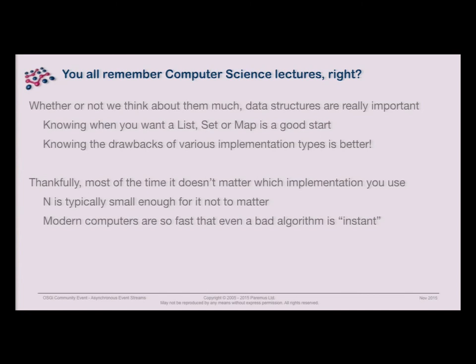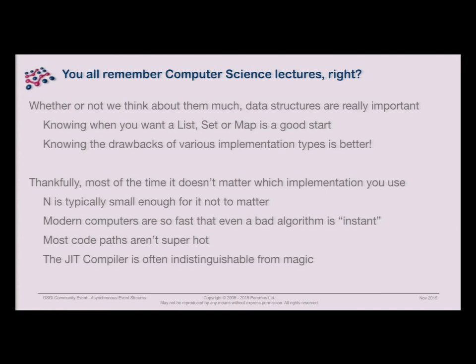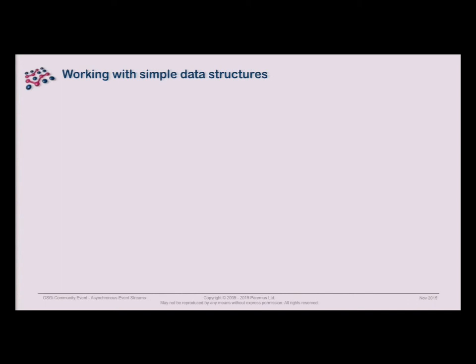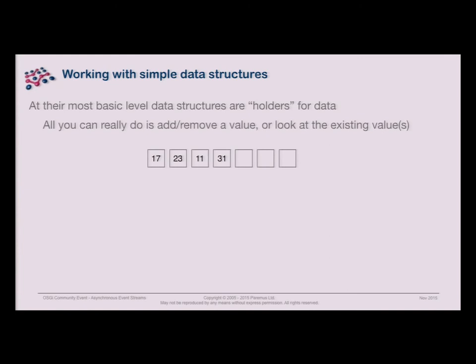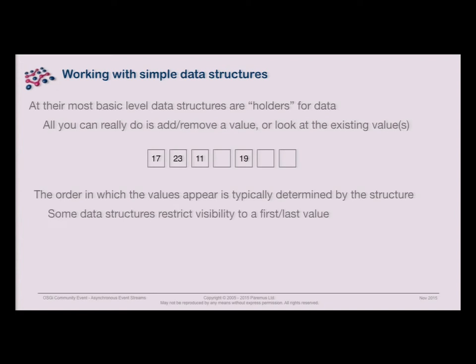Even when it does matter, it doesn't matter because computers are fast — modern computers are just ridiculously fast. The JIT makes code go so fast that it doesn't matter if you make a mistake a few times. At the most basic level, a data structure is a holder for data. You can add, remove, or look at things. The order things come out is determined by the structure, and some data structures are more restrictive — like a stack, where you only get a first or last value. This is what we call iteration: processing the values in a collection.